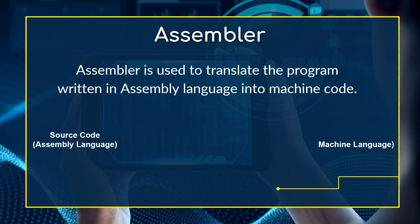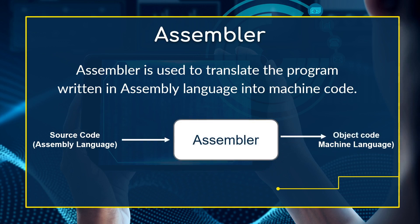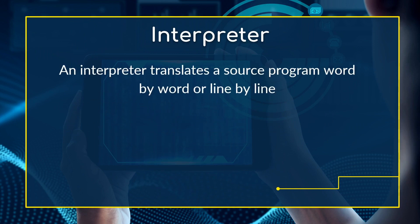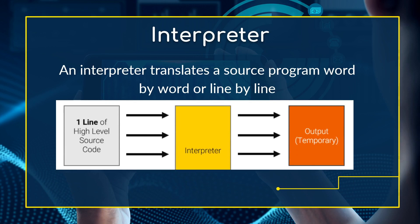The next translator is the interpreter. An interpreter translates a source program word by word or line by line. A program consists of instructions that have to be followed to perform a particular task. When translating source code into object code, the interpreter converts line by line through those series of statements.